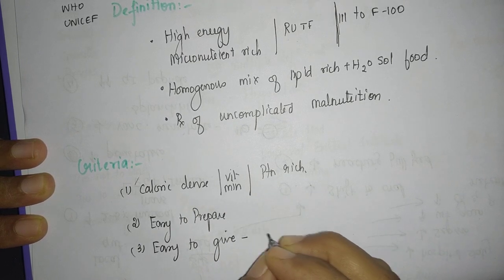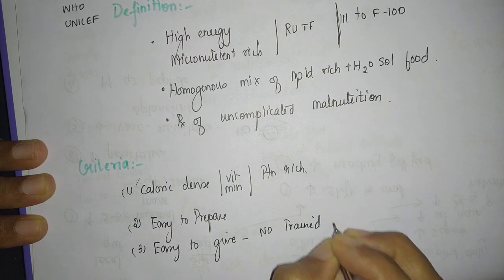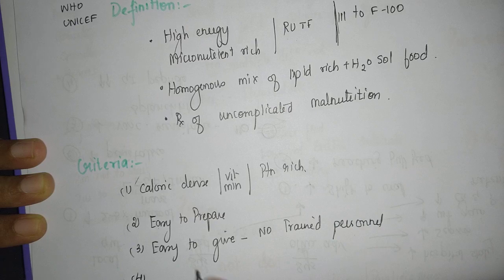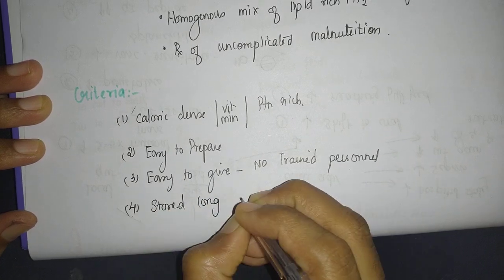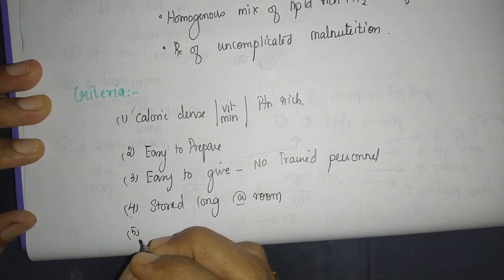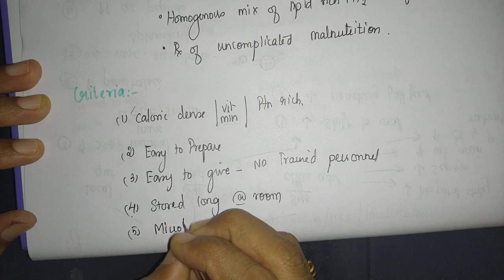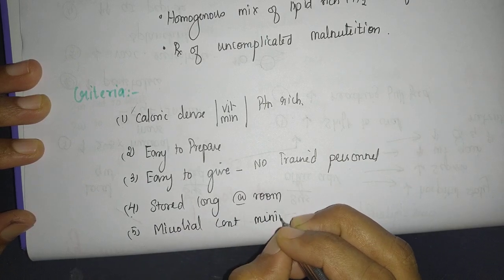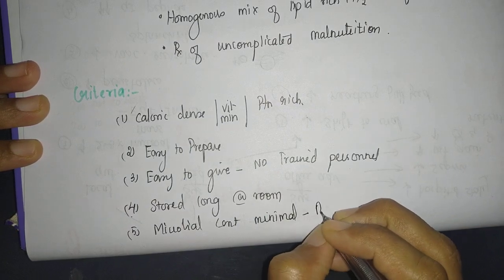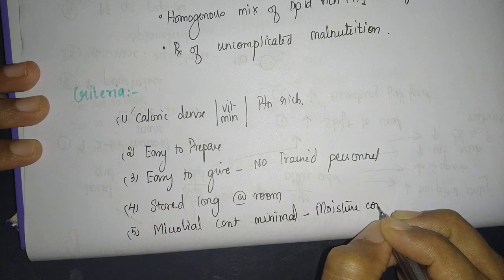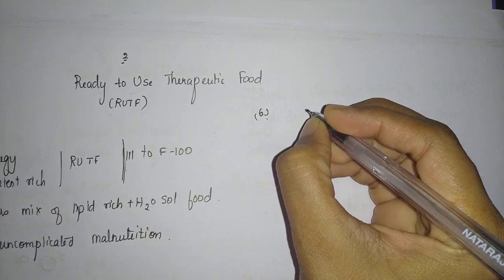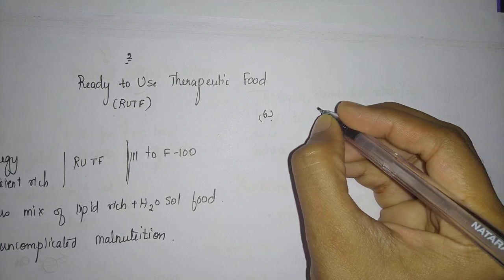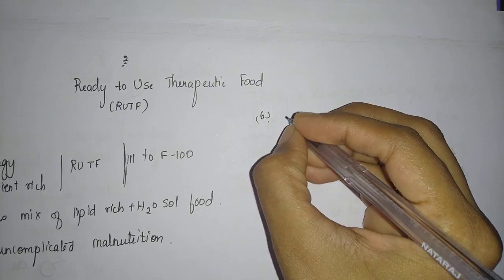It does not require trained personnel; the mother can give this very easily. After giving, you need food that can be stored for long duration at room temperature without spoiling. Microbial contamination should be minimal, so we keep the moisture content less. The mother expects the child to gain weight, so it should be fast-acting.